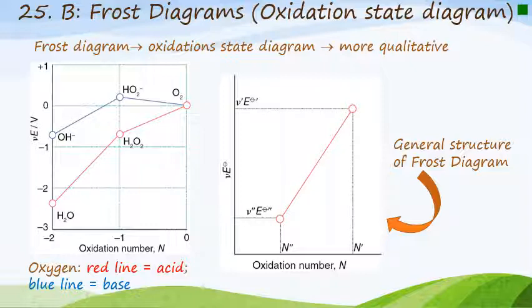On the left-hand side is a Frost diagram showing the relationship for the element oxygen, with a number of oxidation states and species involved — two or three oxidation states. We'll do the example at the end of the theory to show how to construct and draw this. On the right is a general structure of a Frost diagram, implying we have two oxidation states for a given element.